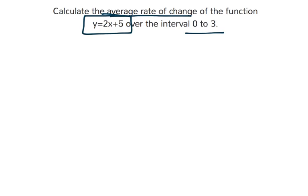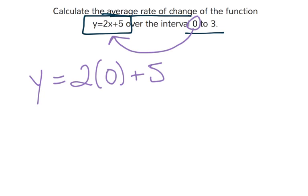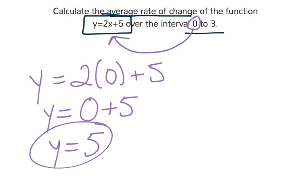So to start, I'm going to plug that 0 in to this equation. Let's solve it. y equals 2 times 0 plus 5. 2 times 0 is 0, so y equals 0 plus 5. y equals 5. So one of my points is 0, 5.